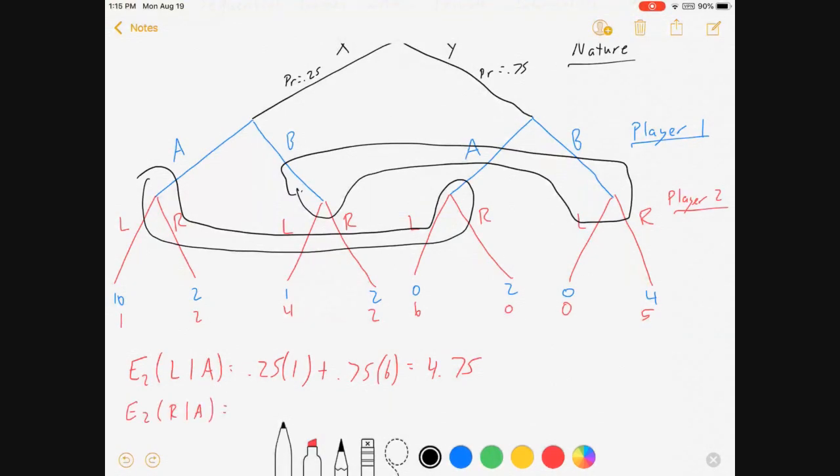Expectation for player two of R given A, there's a 25% chance of getting a payoff of two. There's a 75% chance of getting a payoff of zero, which means my expected payoff is 0.5. Now I go a little slower through my expectations in the part one video. There's actually a whole different video where I explain where the expectations come from. So if I'm going a little fast, you can either pause or you watch those videos, it's up to you.